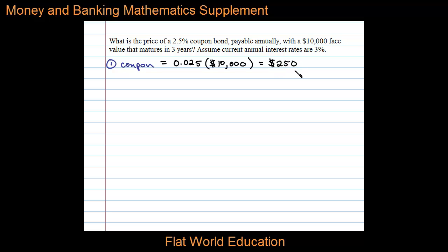That's the amount of interest we earn every year for each of the three years. Next, we want to calculate the present value of each of those payments. Remember, present value can be calculated by taking the future value and dividing by (1 + i)^n.